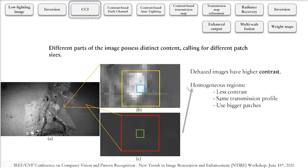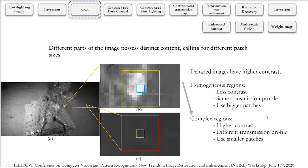For homogeneous regions where we have less contrast, it is reasonable to assume that patches that are big or small will have the same transmission profile, meaning the amount of light that reaches the observer. In these cases, we want to use bigger patch sizes because in the end we'll have darker dark channels, which is desirable. In complex regions, however, we have higher contrast and different transmission profiles, so to better represent them we use smaller patch sizes.